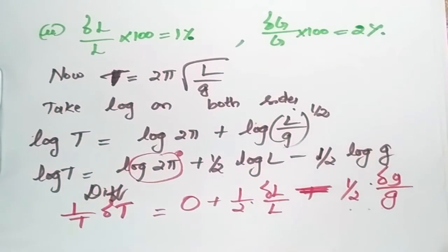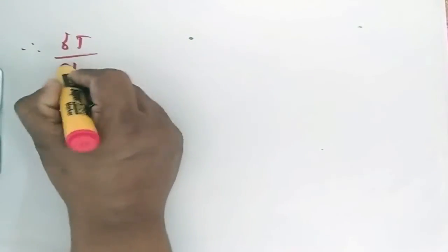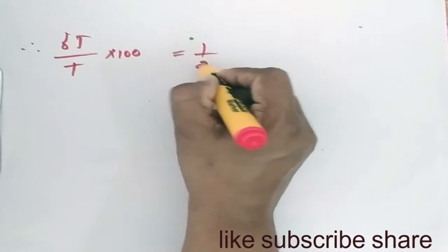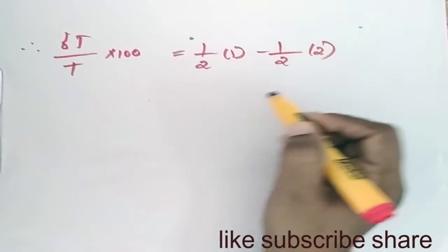Now multiply by 100. Therefore (ΔT/T) × 100 = (1/2) × 1 - (1/2) × 2.